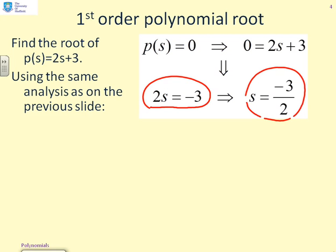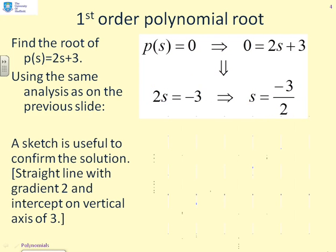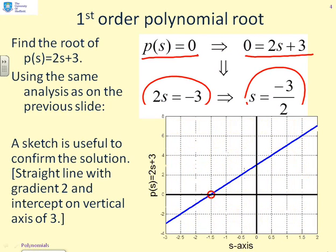If we want to confirm that this is true, as we did in the first video where we did sketches, we can sketch this polynomial. Now, being a first-order polynomial, you will get a straight line. And there it is, this blue line, p(s) equals 2s plus 3 with s on the horizontal axis. Clearly, you can see that there's an intercept at minus 1.5, which is where we've computed the root.